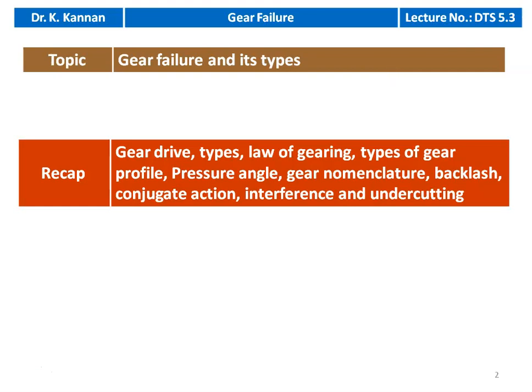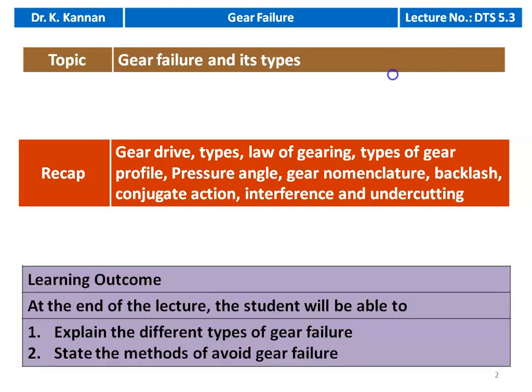In the earlier two lectures on gear design, we discussed the different types of gear drive, law of gearing, types of gear profile, and pressure angle. We defined gear nomenclature, backlash, conjugate action, interference and undercutting. The learning outcome for this lecture: at the end of the lecture, the student will be able to explain the different types of gear failure and state the methods of avoiding gear failure.